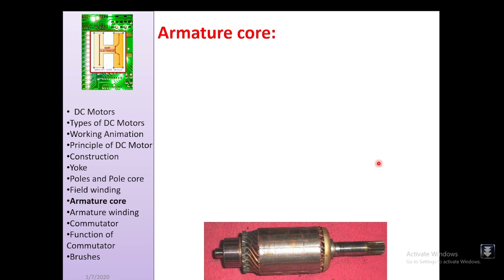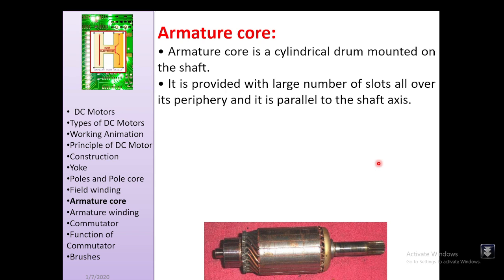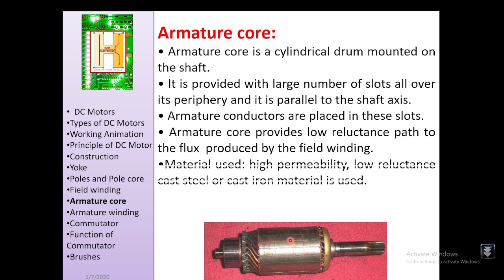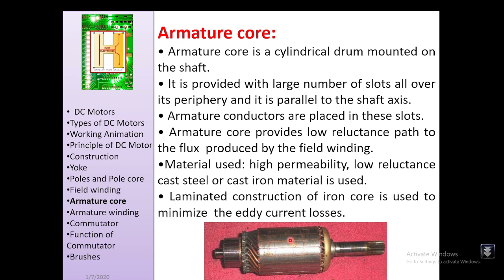The armature core is a cylindrical drum mounted on the shaft with a large number of slots around its periphery, parallel to the shaft. Armature conductors are placed in these slots. The armature core provides a low-reluctance path to the flux produced by the field winding. It is made of high-permeability, low-reluctance cast steel or cast iron, with laminated construction to minimize eddy current losses.